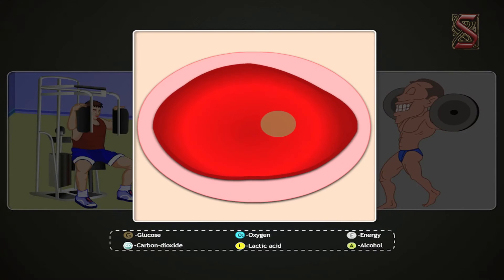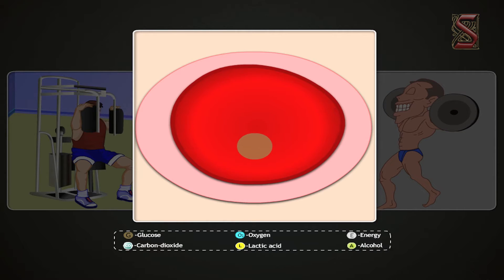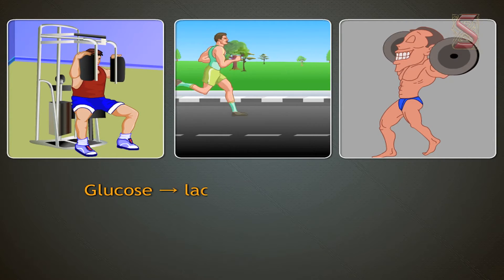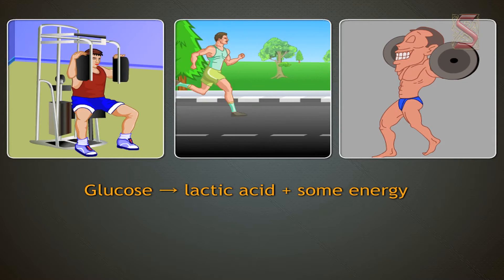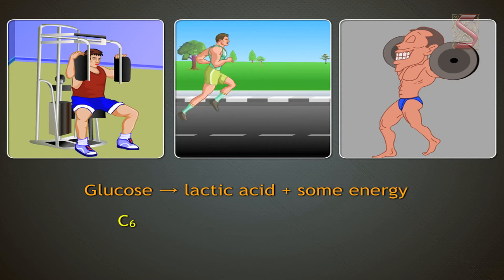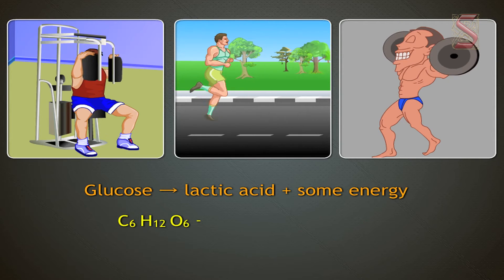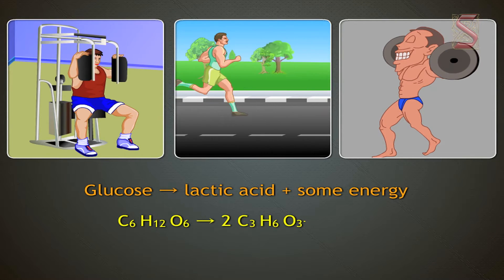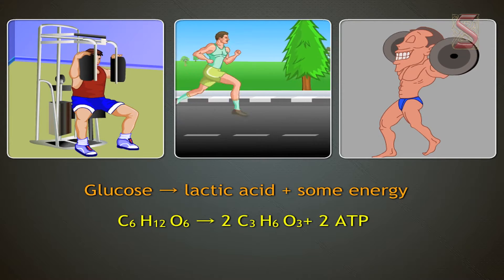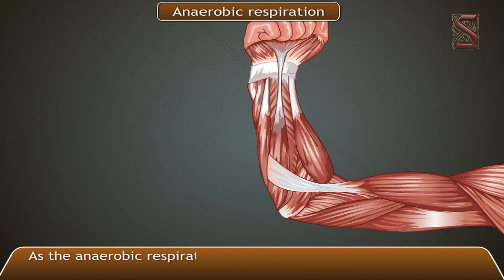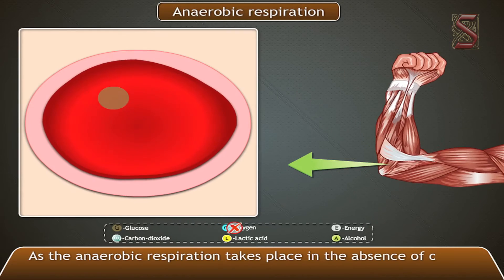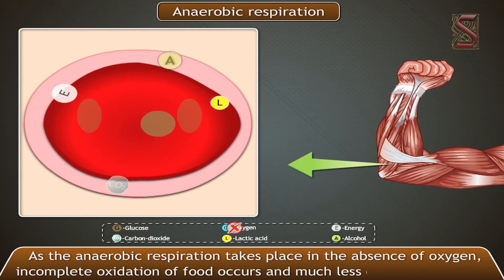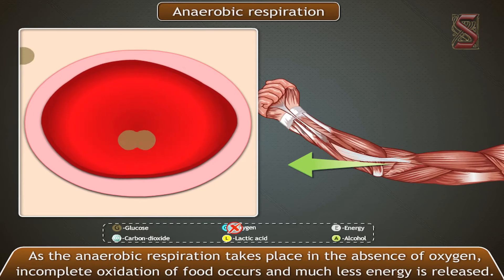In this case, glucose is broken down into a substance called lactic acid: glucose gives lactic acid plus some energy. The chemical equation is C6H12O6 → 2C3H6O3 + 2ATP. As anaerobic respiration takes place in the absence of oxygen, incomplete oxidation of food occurs and much less energy is released.